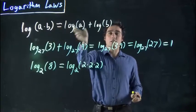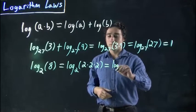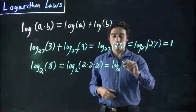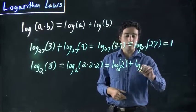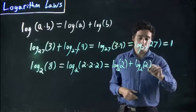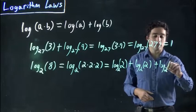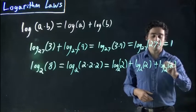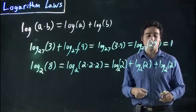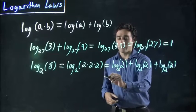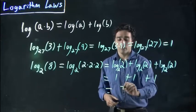Well this could be split into 3 logs. So if I really want, I can think of this as log to the base 2 of 2 plus log to the base 2 of 2 and plus log to the base 2 of 2. Well once again, just like this was, these are all going to be 1. So this is the same as writing 1 plus 1 plus 1, or 3.